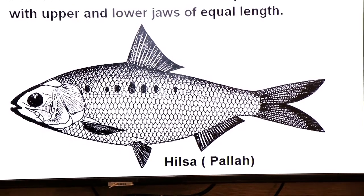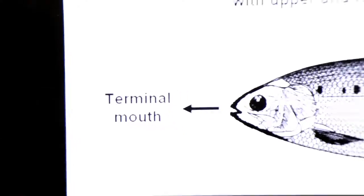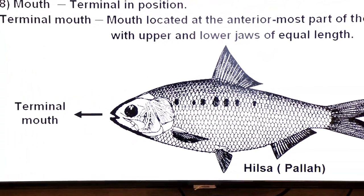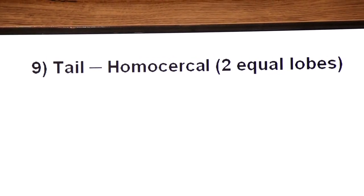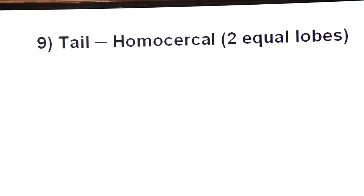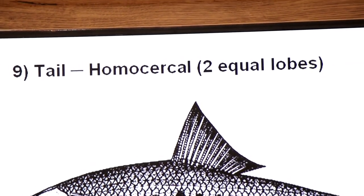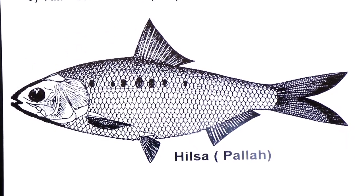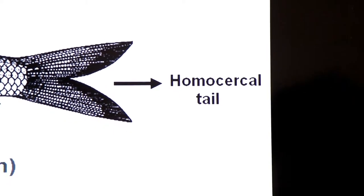Dear students, this is the tail of bony fish, homocercal. It is divided into two equal lobes. The tail is divided into two equal lobes. Such a type of tail is called homocercal tail.